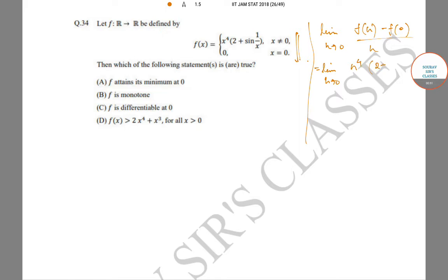One h gets cancelled, which gives us limit as h goes to 0 of 2h^3 + h^3 sin(1/h).